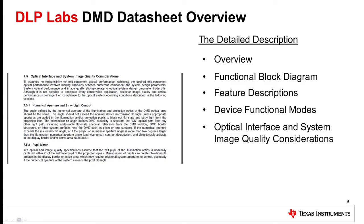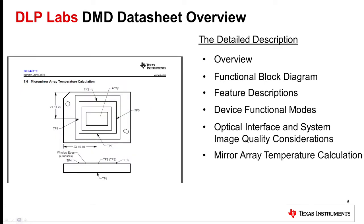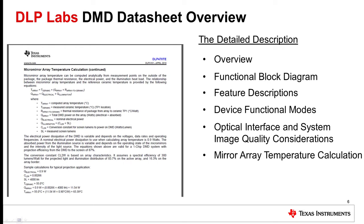The optical interface and system image quality section describes topics critical to the optical design in order to maximize the image quality of the resulting display system. These topics include illumination overfill, stray light control, and the matching of illumination and exit pupils. The following section describes how to calculate the micromirror array temperature. The thermal test points on the device are shown in a diagram, and a set of equations on how to calculate array temperature are given.